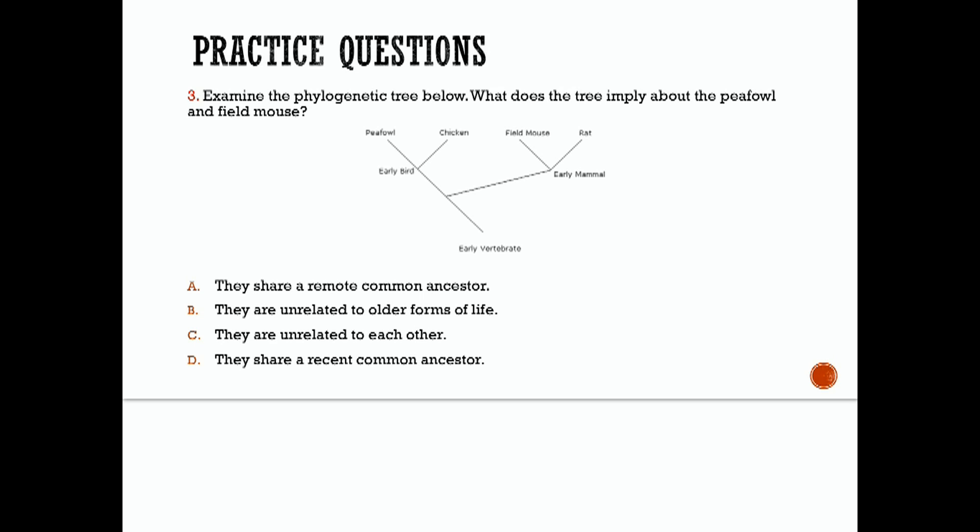Number three, examine the phylogenic tree below. What does the tree imply about the pea fowl and the field mice? Go ahead and pause it, look over your choices and see what you think. So each new species that appears is represented by a branched line. In this, only one organism down here is represented initially, this early vertebrate. Vertebrate means it had a backbone. But these four organisms up here are shown as descendants of the original organism. So a pea fowl and a field mice descended from a remote common ancestor, not a recent common ancestor. It's from a remote common ancestor, the early vertebrate species. So we're going to go with A for this one.